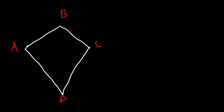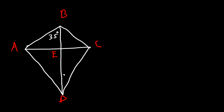Let's work on another problem. We have kite ABCD with intersection point E. The short diagonal and long diagonal are identified. Angle ABE is 35 degrees and angle CDE is 25 degrees. Calculate every other angle in this figure. Since the two diagonals meet at right angles, all four angles at E are 90 degrees.